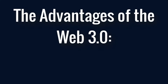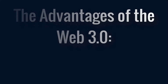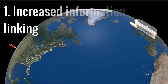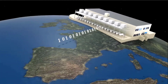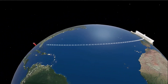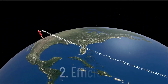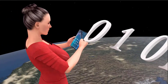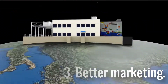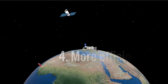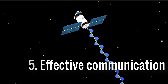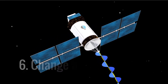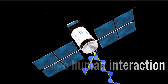Next, let's talk about the advantages of Web 3.0. Number 1: Increased Information Linking — the Semantic Web will help in the connectivity of online data. Number 2: Efficient Searching. Number 3: Better Marketing. Number 4: More Efficient Web Browsing. Number 5: Effective Communication. And Number 6: Changed Human Interaction.